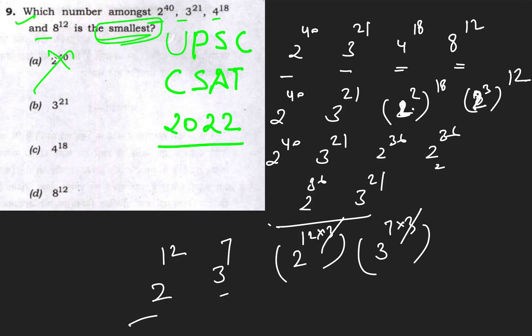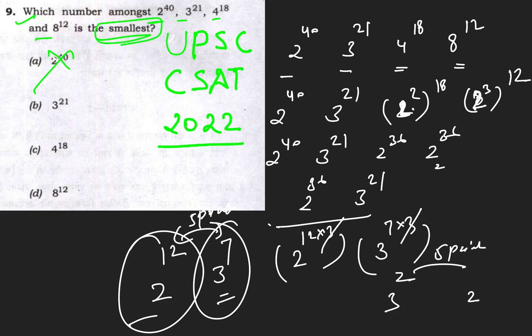Looking at these numbers, 2^12 gives you around 4096, while 3^7 equals 2187. So 3^7 is smaller, which means 3^21 is the smallest number. Therefore, your answer is 3^21 (option b).